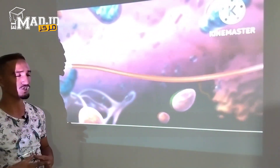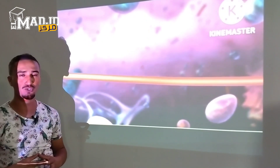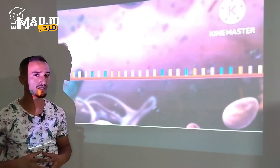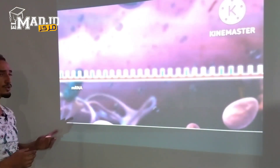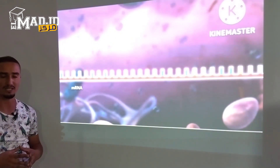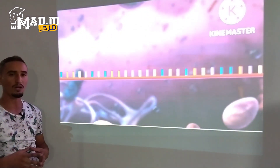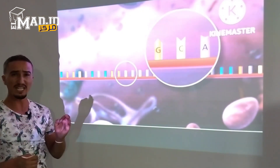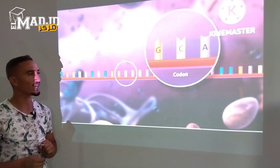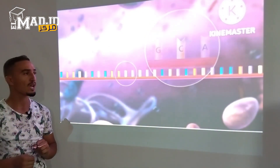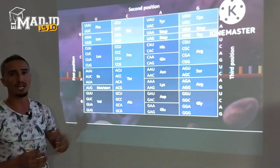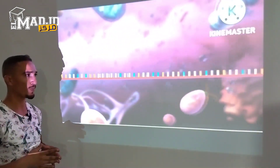How is the information in the mature messenger RNA strand translated into protein? The nucleotide bases are grouped into three-letter codes called codons. The genetic code includes 64 codons. Most codons code for specific amino acids.